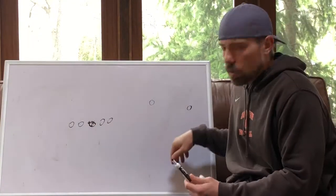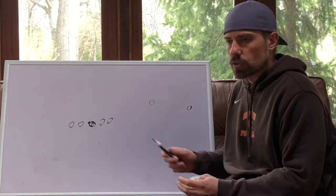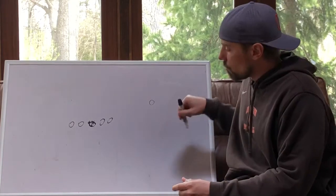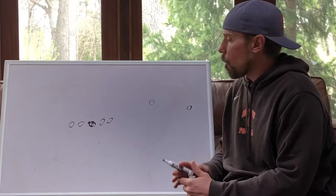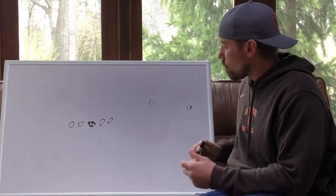There's the linebacker lower level, and the corners or safeties can be involved in that. But there's that lower level which involves the hook zones, the flats, that middle drop. And then there's the deep zone, which is where you get your deep thirds, deep halves, deep quarters.